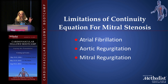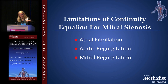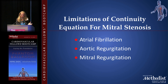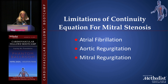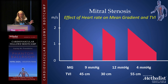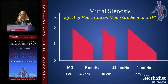Limitations of the continuity equation include: atrial fibrillation, because beat-to-beat variability makes each time-velocity integral different depending on the R-R interval; aortic regurgitation, if you calculate stroke volume through the left ventricular outflow tract — regurgitation volume from the AI causes stroke volume overestimation, leading to underestimation of mitral stenosis severity; and mitral regurgitation, where increased volume across the mitral valve increases the TVI in the denominator, causing overestimation of mitral stenosis severity. In atrial fibrillation, TVI values can vary from 45 to 55, so we average approximately five beats to approximate the true mitral valve area.